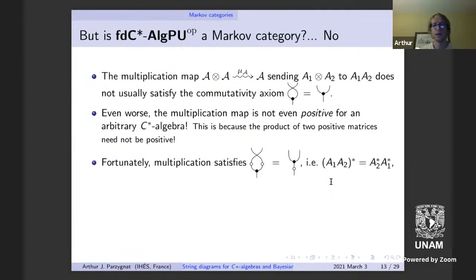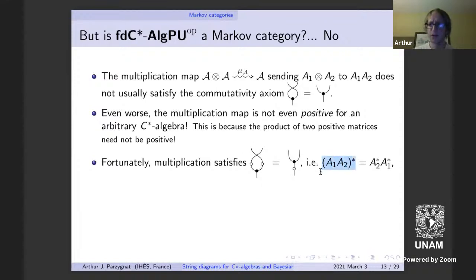There is something that saves the situation in some sense: the multiplication map does satisfy another equality when you include the involution. If A1 and A2 are two inputs, applying the multiplication map and then the involution equals swapping to get A2, A1, taking the adjoint of each, and then multiplying. This is what the multiplication law satisfies in the context of C*-algebras.